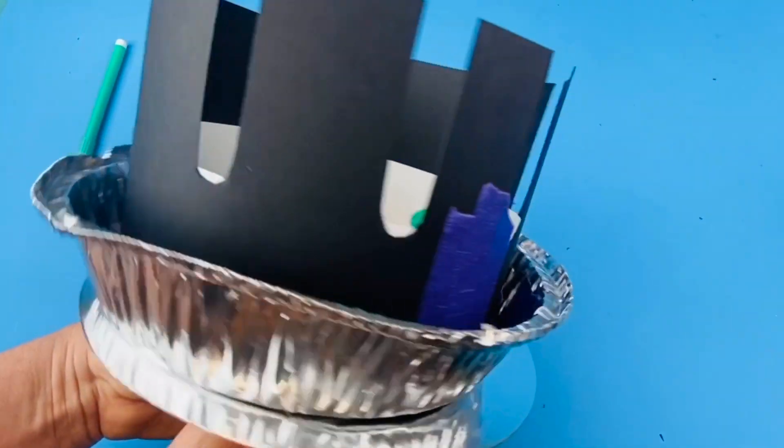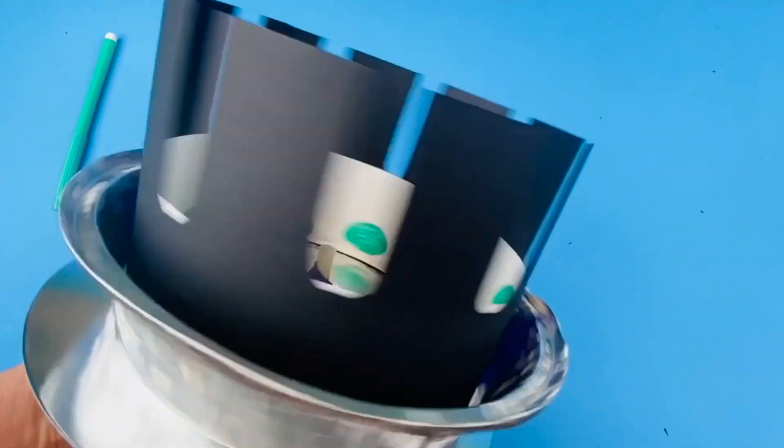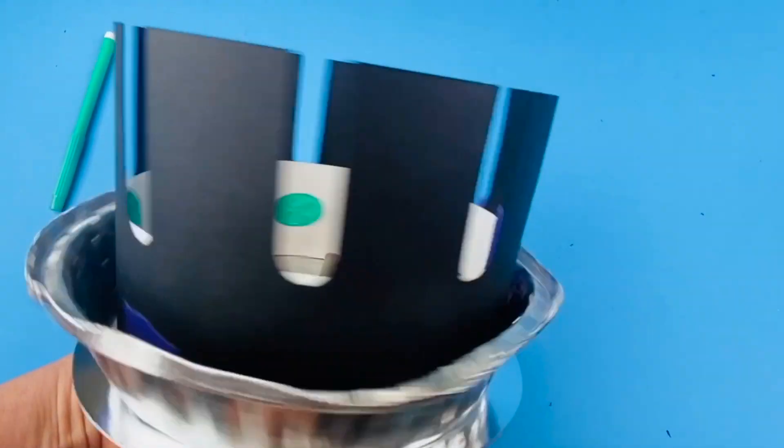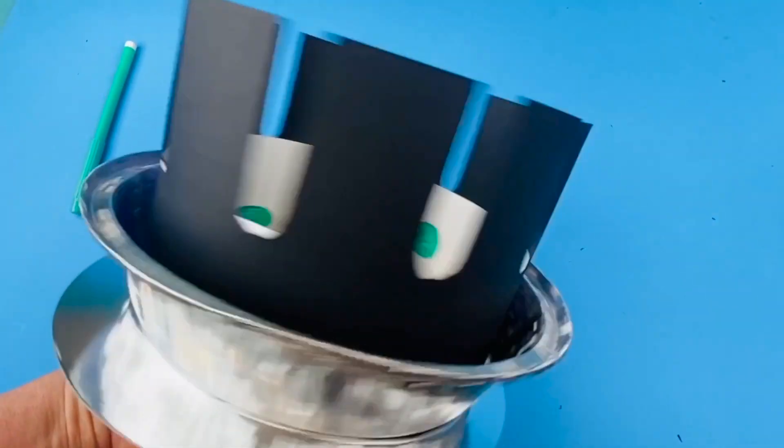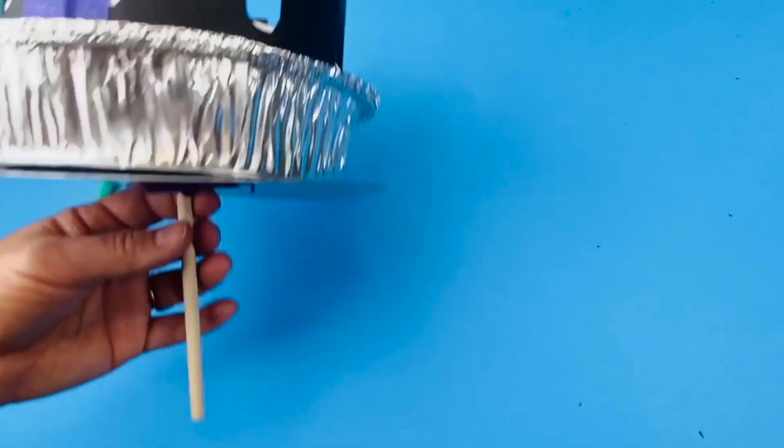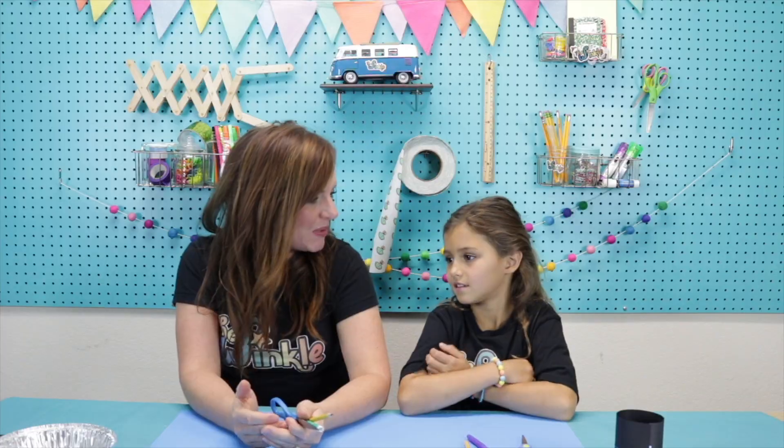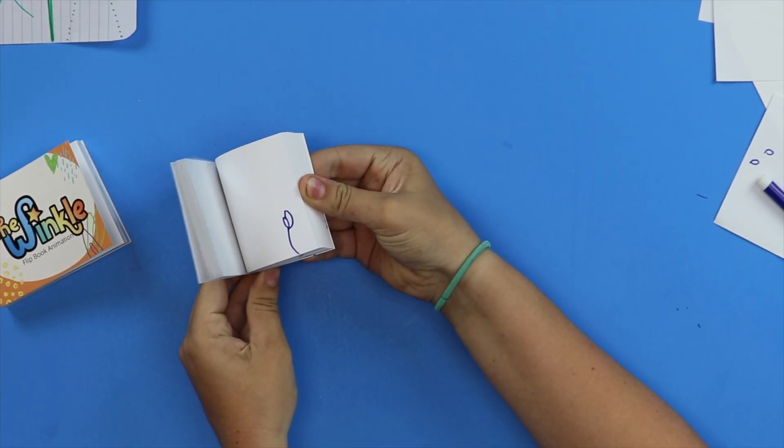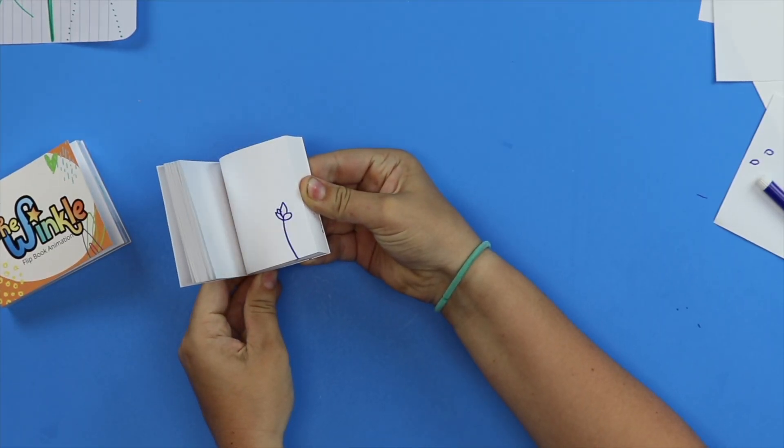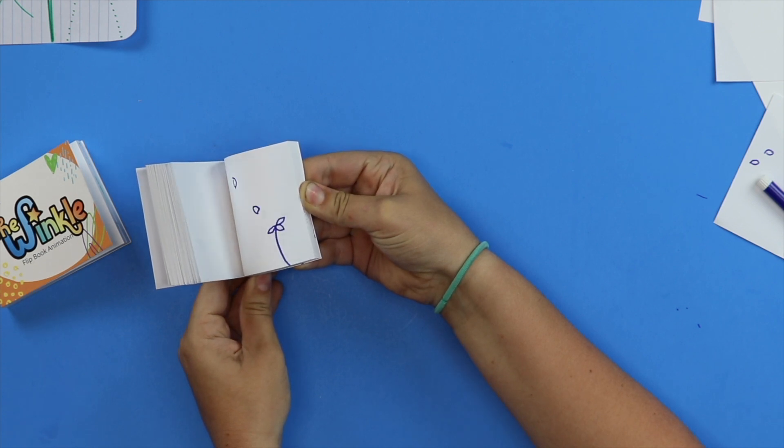So the idea behind a Zoetrope is if you move a lot of images through a single spot fast enough, you create the illusion of an animated image. So do you remember that flipbook animation that we did where we had all those pages and we did an animation we were flipping through it? Yeah, I just did mine.